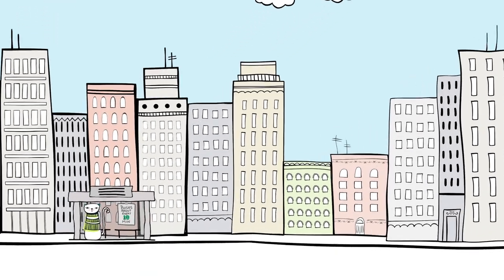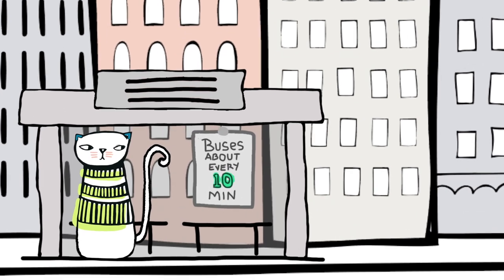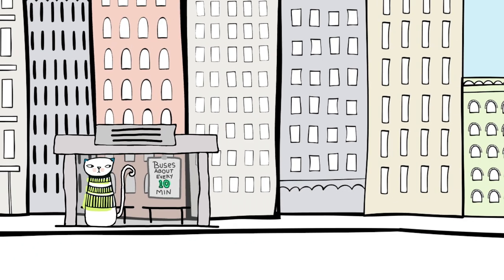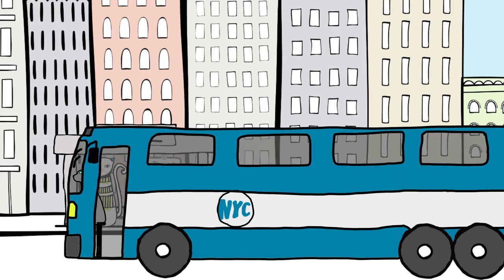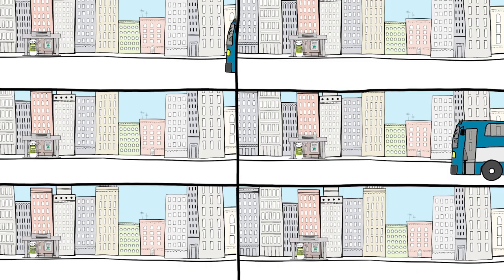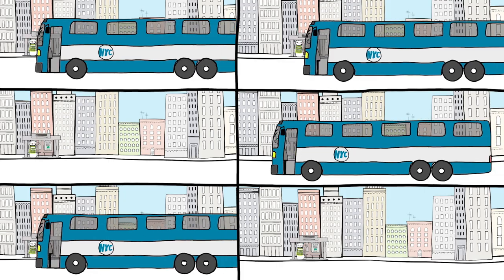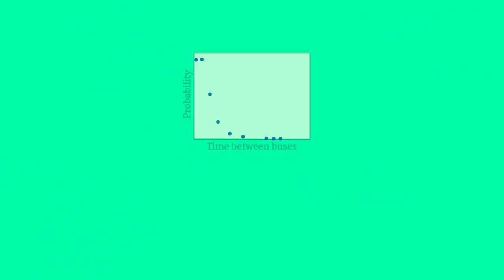Imagine arriving at an empty bus stop in New York City. The last bus must have just left, but the sign says a bus comes every 10 minutes on average. What's the probability that the next bus will arrive within five minutes? The probability of a random event happening within some interval, like a bus coming within the next five minutes, is given by a curve called a Poisson distribution.